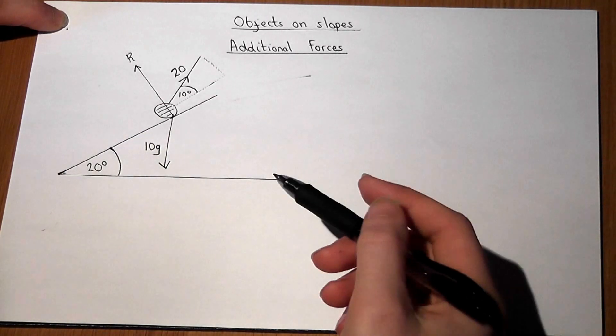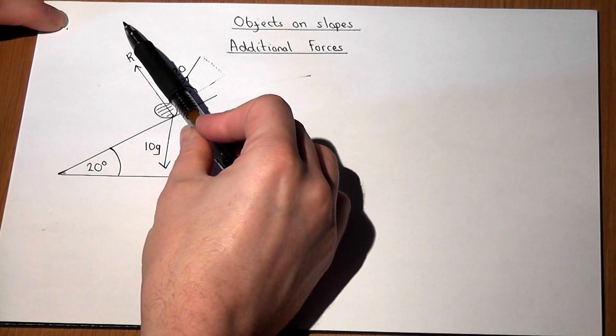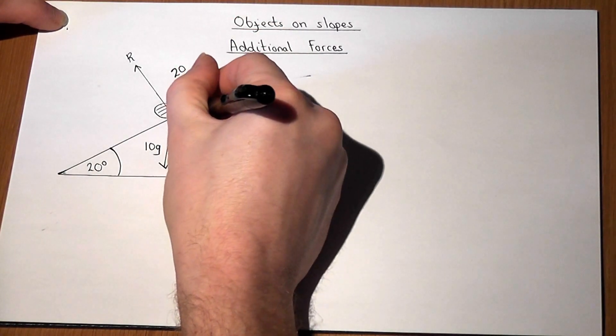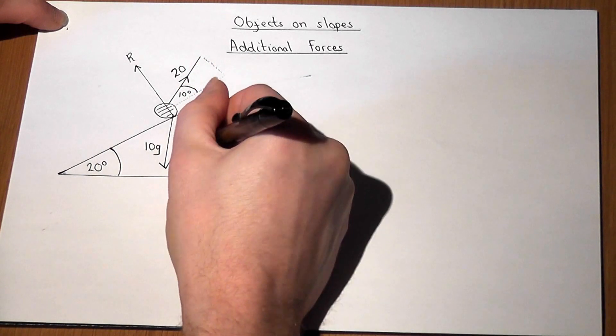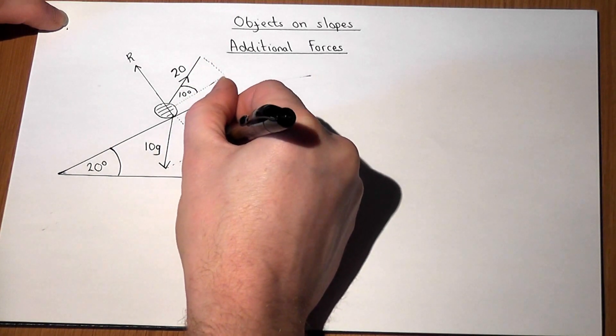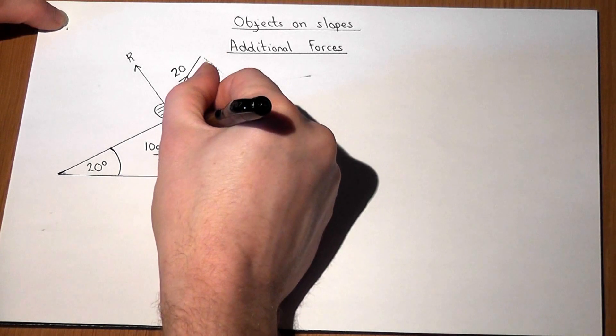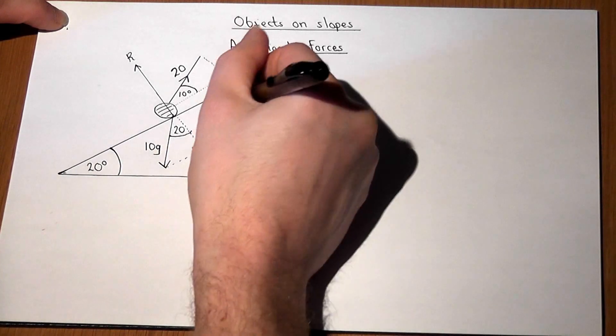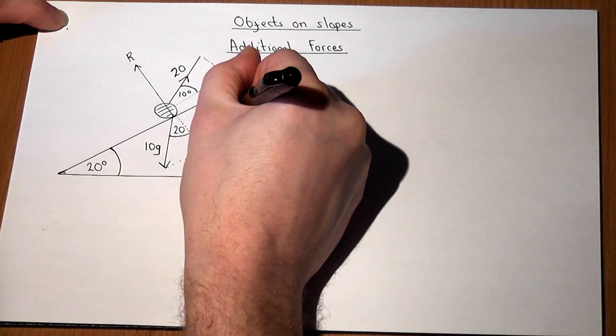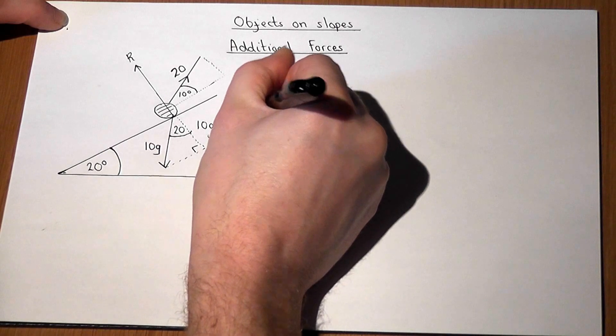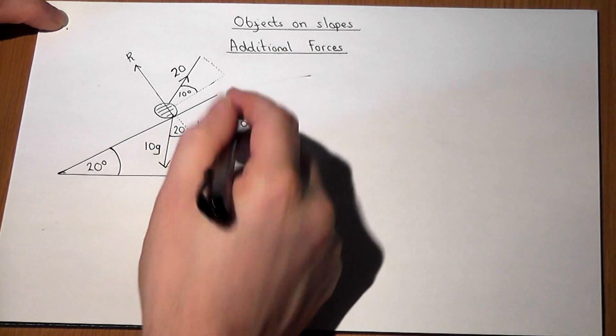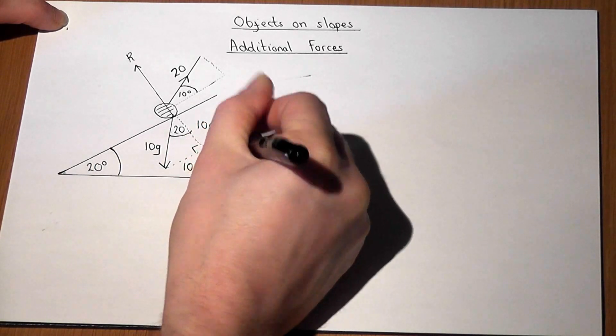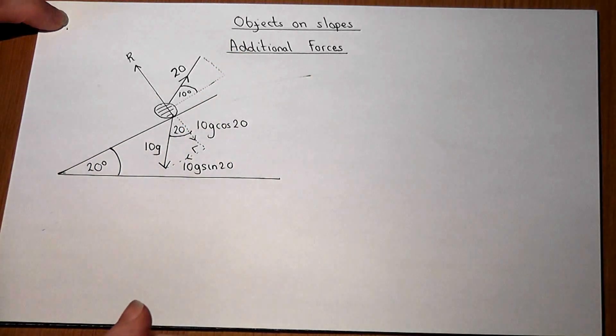Before we start, we're going to resolve forces into components right on the slope and also down the slope. So we'll do the weight first. This is a fairly routine calculation. We have the angle 20 here is the same as that angle there, which is also 20. So adjacent, we'll have 10g cos 20, and the opposite will be 10g sin 20. So they're the two components of the weight.